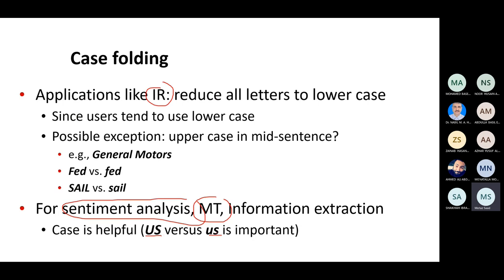You need to understand when normalization steps are useful and when they are not. One common mistake students make is applying stemming or normalization for sentiment analysis, which doesn't improve accuracy. For example, the word 'unhappy' — if you apply a stemmer, the prefix 'un-' is removed, turning a negative word into a positive one. That's why stemming doesn't help for sentiment analysis. For machine translation, you need to preserve all information to accurately translate from source to target language, so lemmatization or stemming doesn't help either.